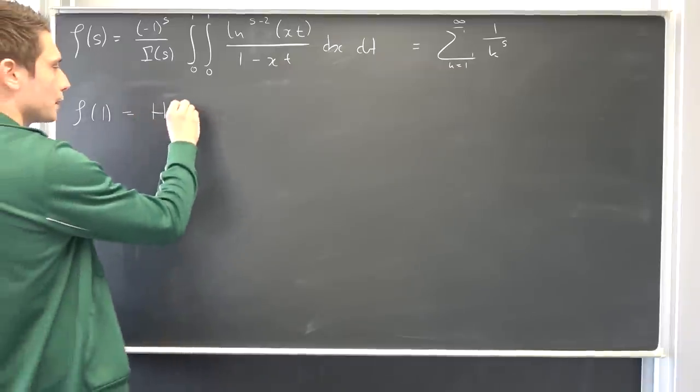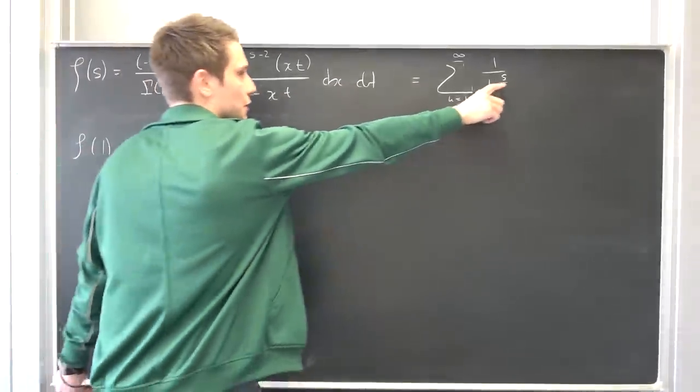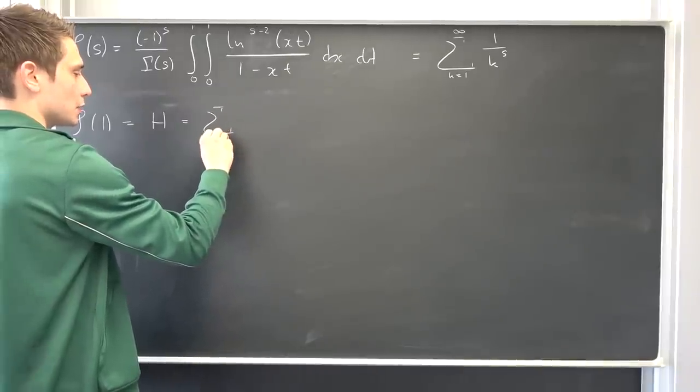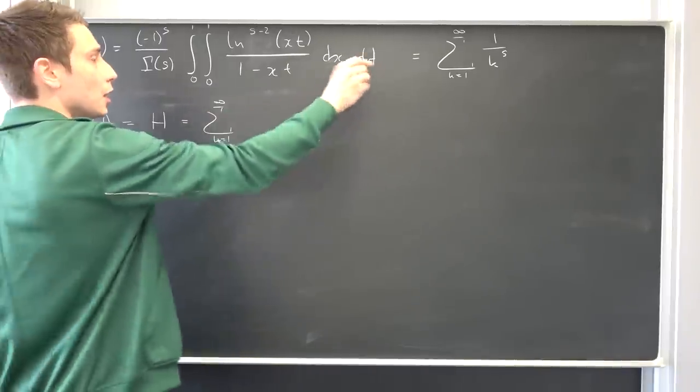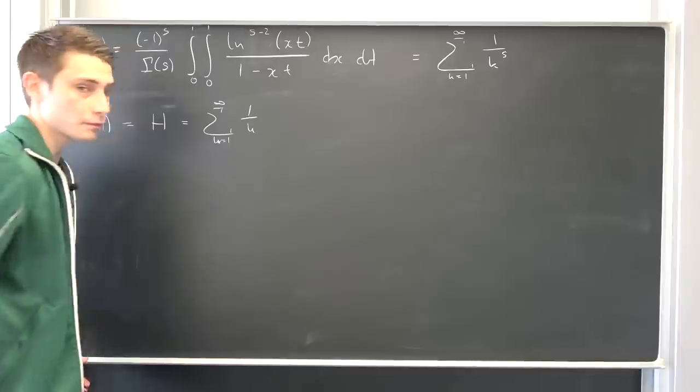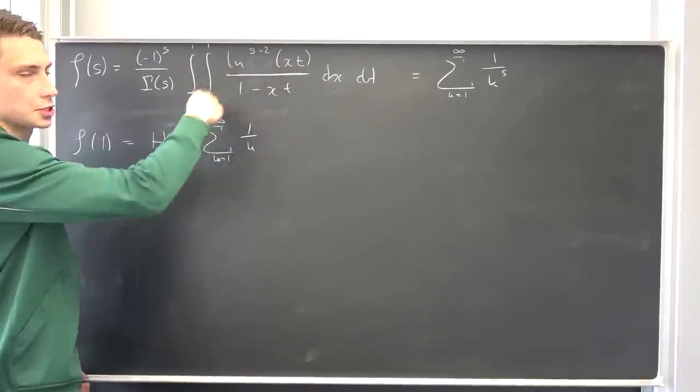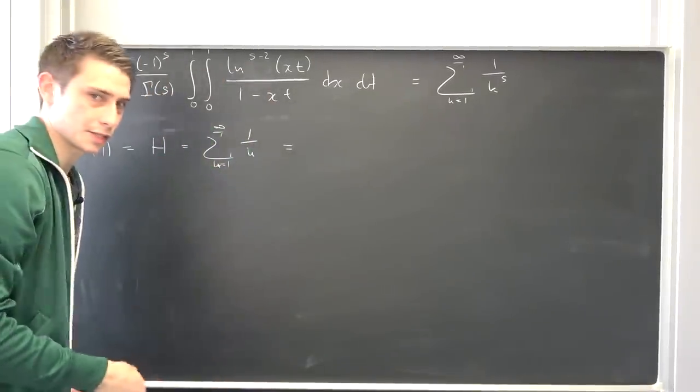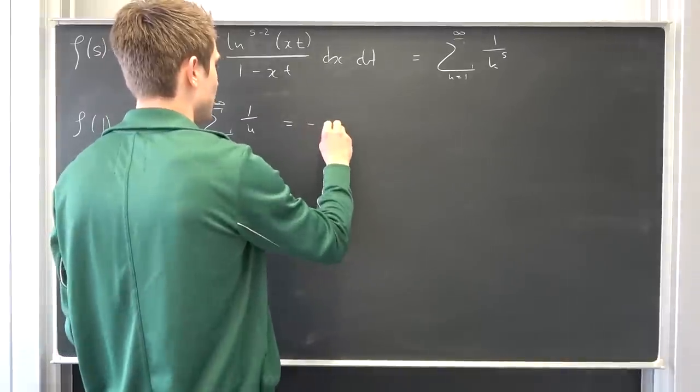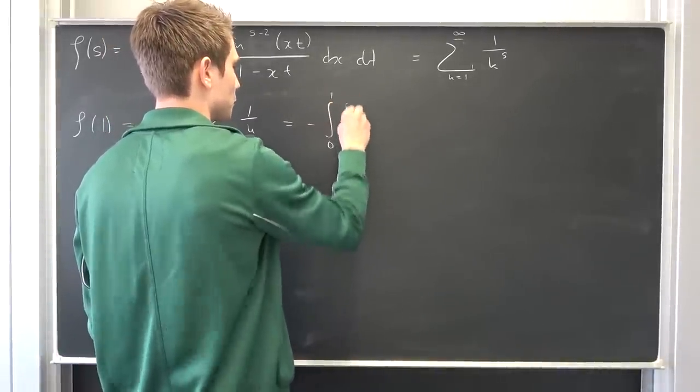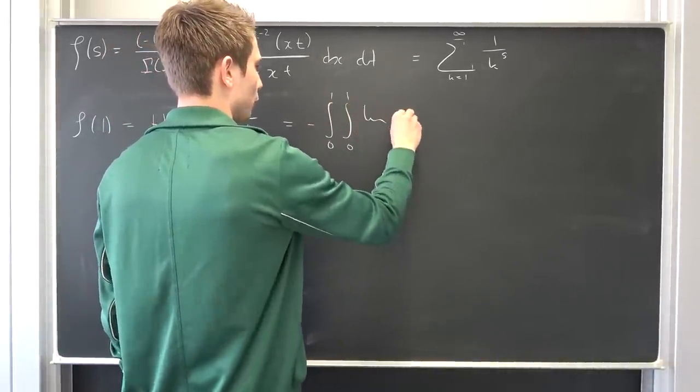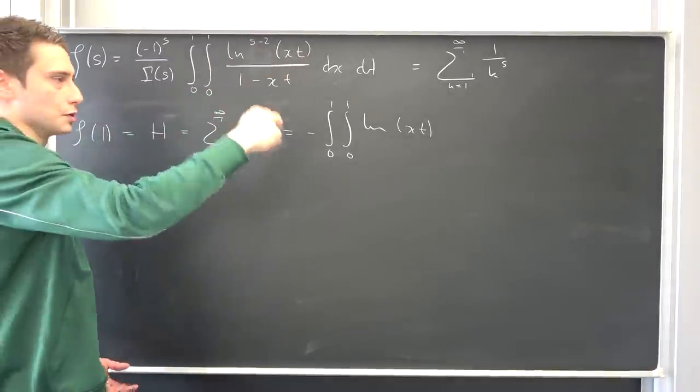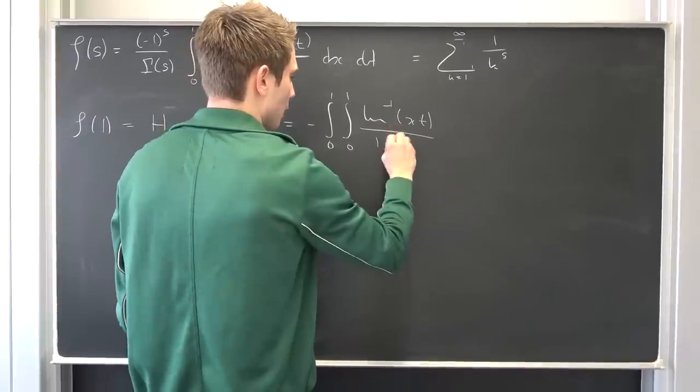We know that this is equal by definition to the harmonic series, which we are going to denote by capital H. It's equal to the sum from k equals 1 to infinity of 1 over k, and also it's equal to this integral representation with s = 1 plugged in. So that's gamma of 1, which is 0 factorial, which is just 1. We have negative integral from 0 to 1 of integral from 0 to 1 of natural log of x times t to the negative 1 power over 1 minus x times t dx dt.